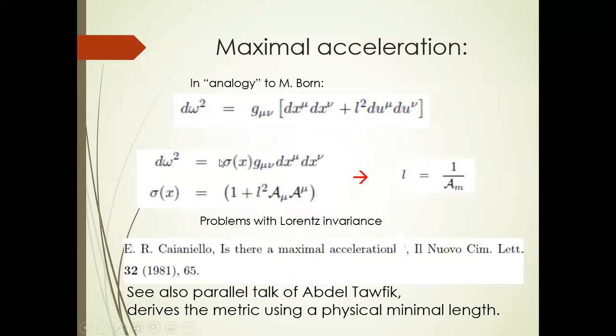When acceleration is of the order of one over L, then this correction factor becomes important. And they studied cases where the infall of material is stopped before reaching the Schwarzschild horizon. So it's also a motivation to avoid the formation of an event horizon and a black hole. I also refer to the talk within this conference of a parallel talk by Abdel Tawfiq. He derived this kind of expressions from a microscopic point of view. So it was a very interesting talk for me.